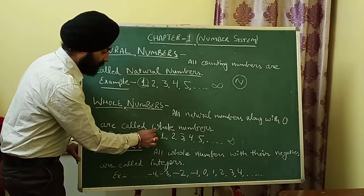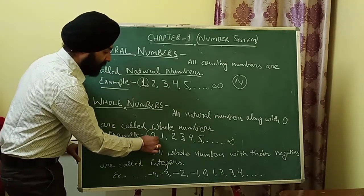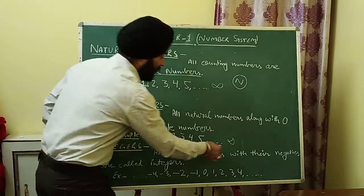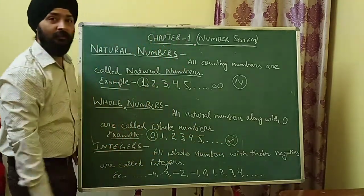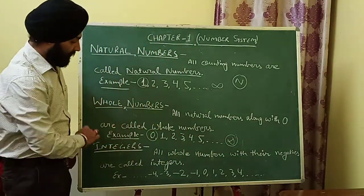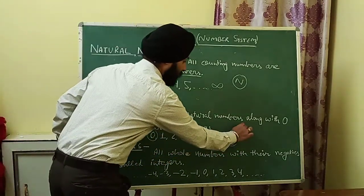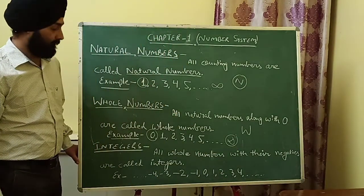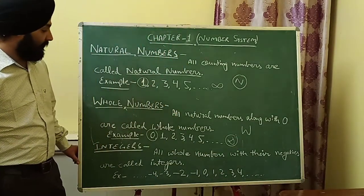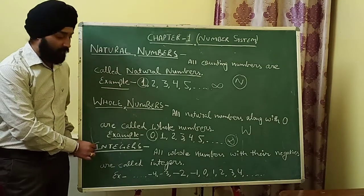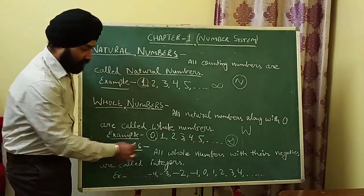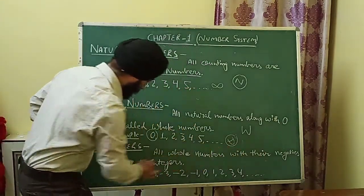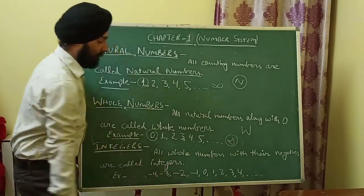What is the smallest whole number? The smallest whole number is zero. What is the largest whole number? That is infinite. Whole numbers are denoted by capital W.